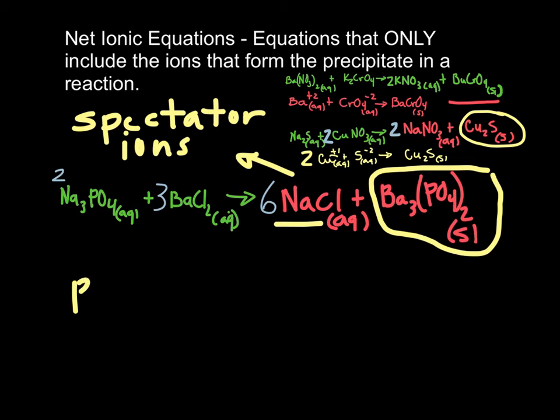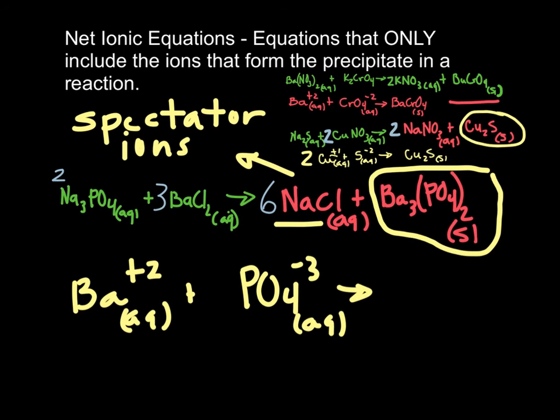Barium gets a plus two charge. And it is aqueous. Phosphate has a minus three charge. And it is aqueous. Together, they form the barium phosphate: Ba₃(PO₄)₂. And that is a solid.